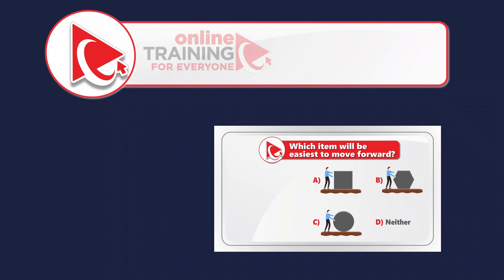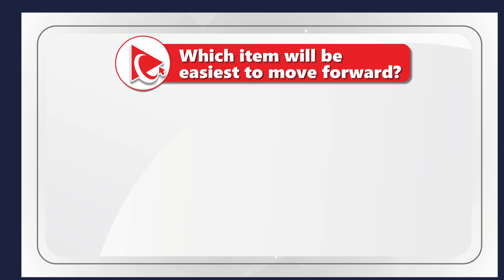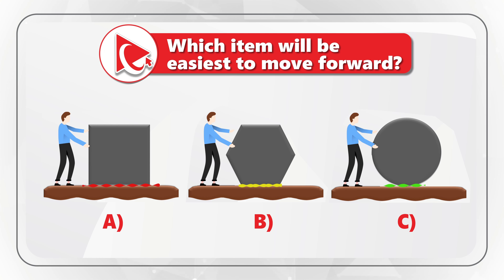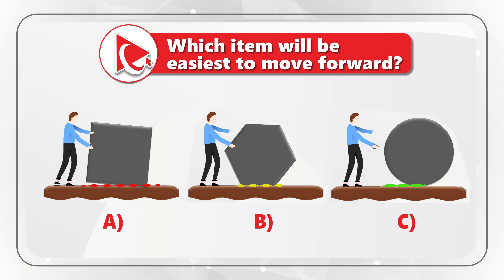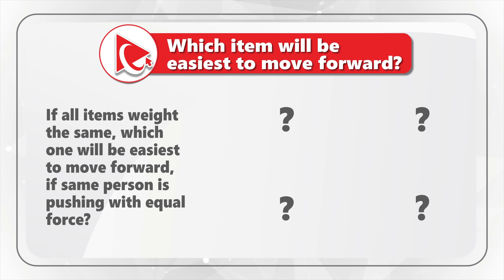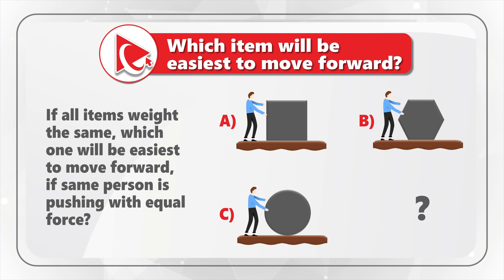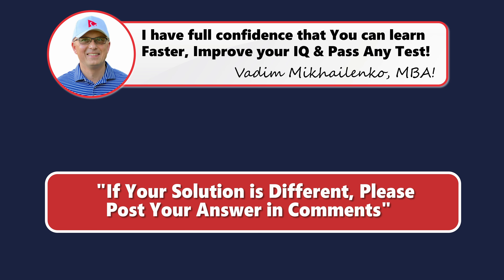And now I have a question for you to practice your skills. We have three different scenarios of a person moving an object — Choices A, B, and C. If all items weigh the same, which object would be easiest to move forward if the same person is pushing with equal force? Select one out of four possible choices: A, B, C, or Choice D: neither one. Please post your answer in comments so I can give you my feedback. Thanks for participating and good luck solving the challenge!